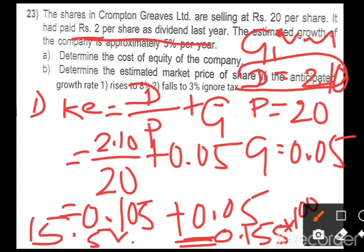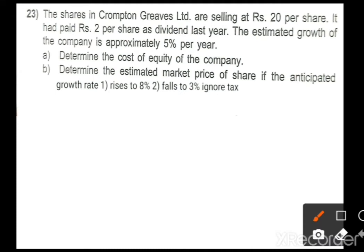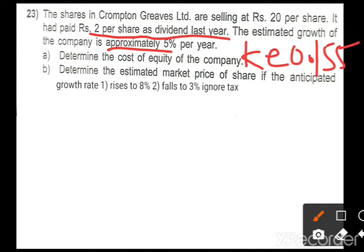To clarify the dividend distinction: in the previous problem, the dividend of 5 rupees per share was a current year dividend, so we used it directly. In today's problem, the 2 rupees is explicitly a last year dividend, so we must add 5 percent growth to get the current dividend of 2.10. Therefore, Ke = 0.155.